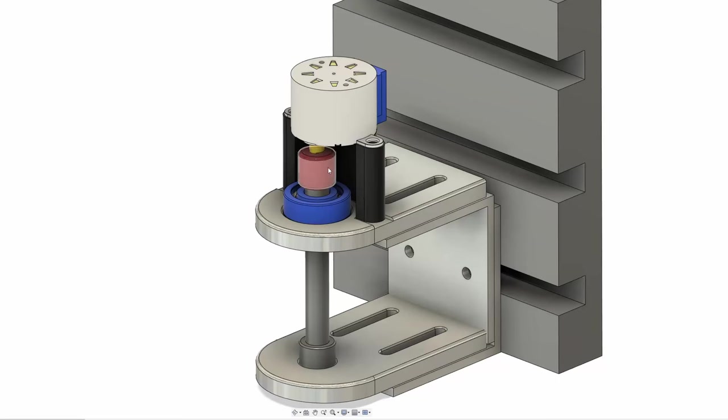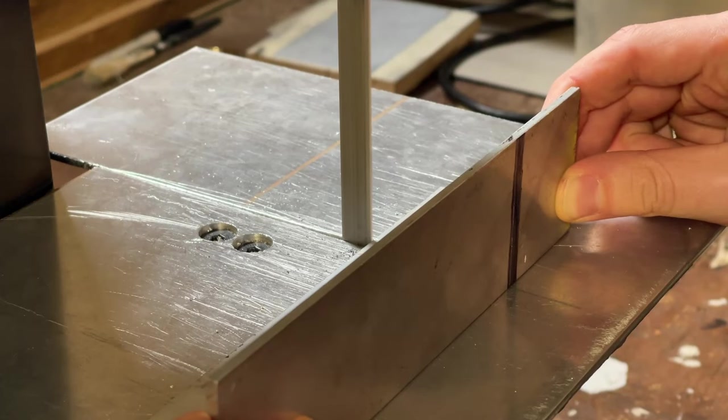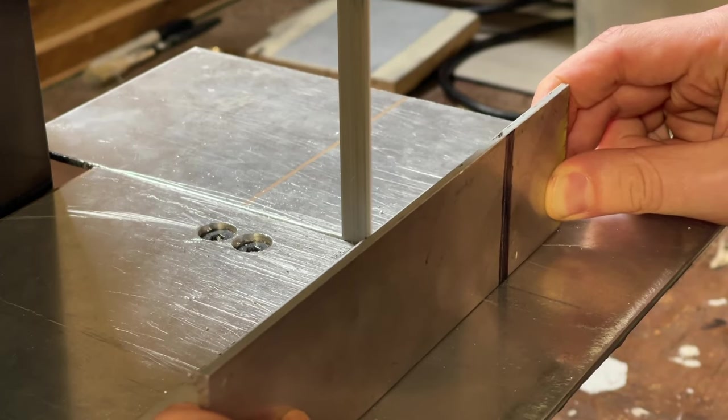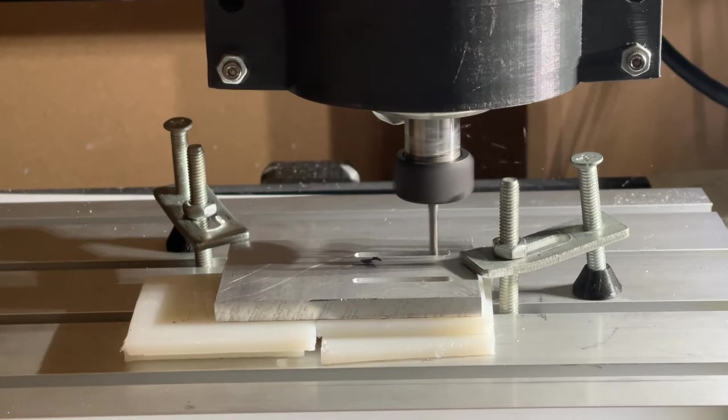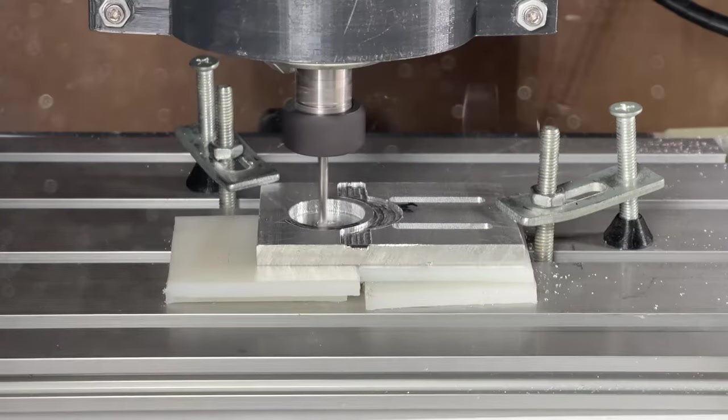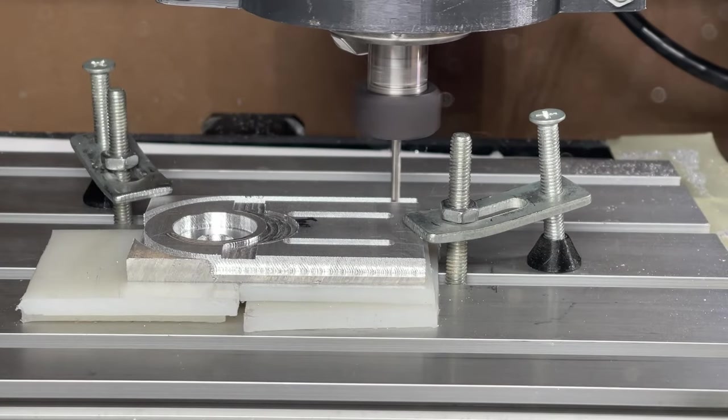So the new design is pretty much the same as the last, except it now directly couples the motor to the gear holding shaft, and is constructed from some aluminum L brackets and two plates that I cut out using the modified 3018 that should provide some extra alignment capability to the setup.